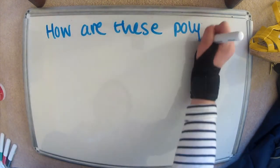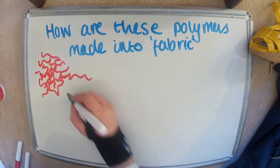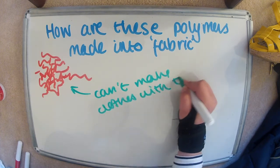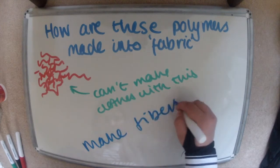How are these polymers made into the fabrics that you use? So they aren't going to work like this, you can't just coat with just a pile of polymers. So what they do is they're made into fibers, and they're made into fibers using a method called spinning.